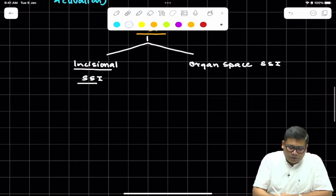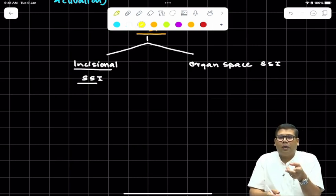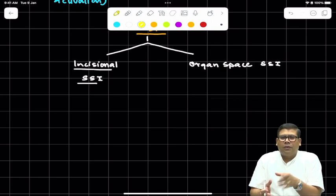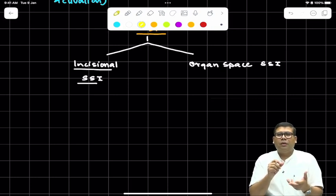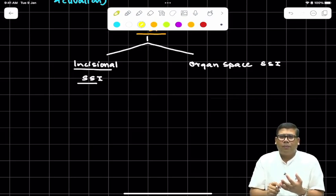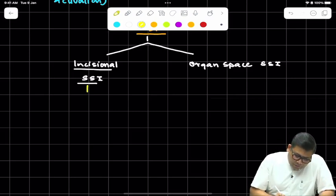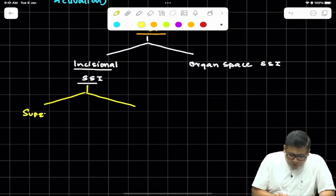When we talk about incision, it has two parts: the skin and subcutaneous tissue, and the remaining part of the tissue except skin and subcutaneous tissues—we have muscles, fascia, and peritoneum. So it is further divided into two types. One is superficial incisional SSI and one is deep incisional SSI.